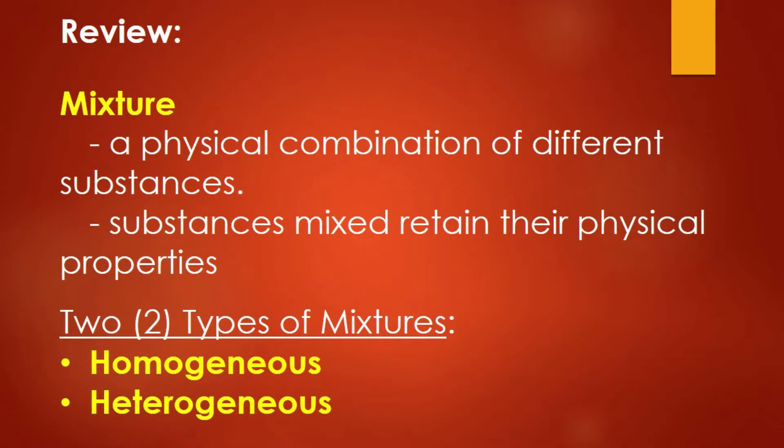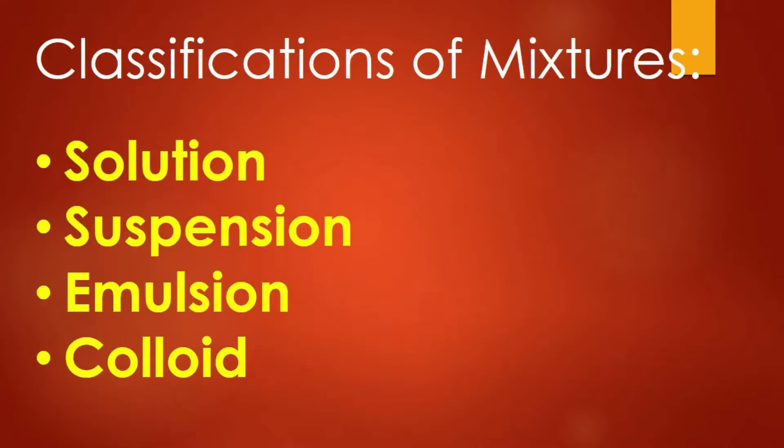In the previous videos, we learned that a mixture is a physical combination of different substances and that they retain their physical properties even after mixing. We learned about homogeneous and heterogeneous mixtures — the two primary classifications of mixtures based on appearance — as well as the four subcategories of mixtures based on properties: solutions, suspensions, emulsions, and colloids.